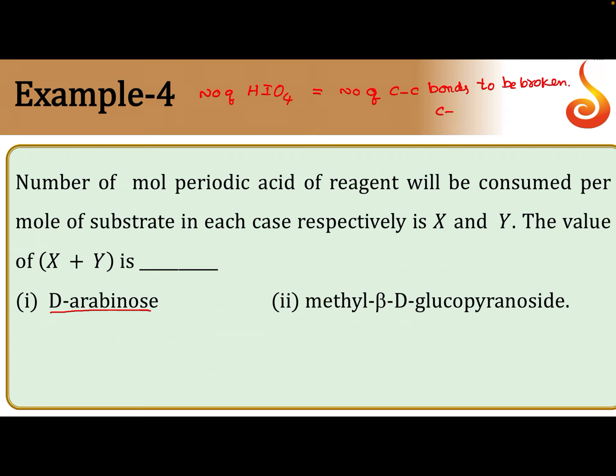Which C-C bond is eligible for the breaking? On adjacent carbons, two OH groups must be there, or one OH and one double bond O, or on adjacent carbons OH and NH2 should be there. These three types of C-C bonds are eligible for oxidative cleavage by periodic acid HIO4.